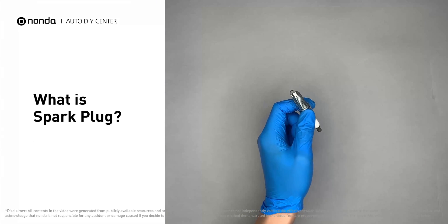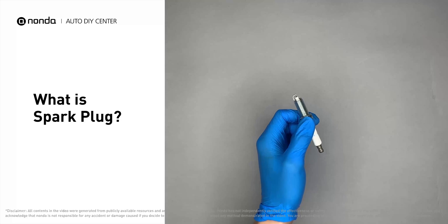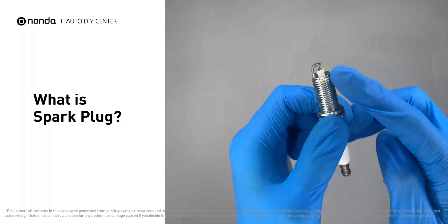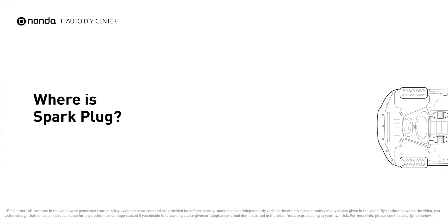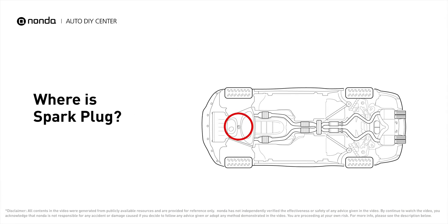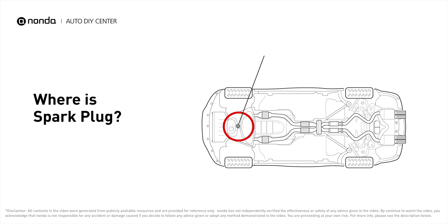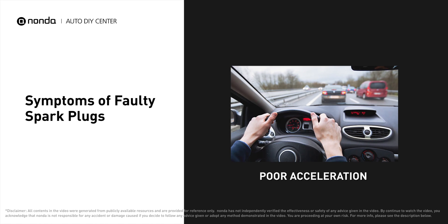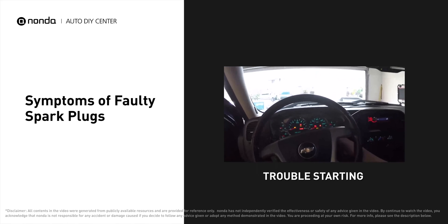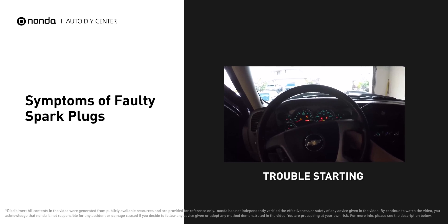Spark plugs are part of the ignition system that supplies the spark igniting the air-fuel mixture, creating the explosion that makes your engine produce power. Typically, spark plugs in 4-cylinder engines are located on the engine's top or side in a row, while spark plugs in inline 6-cylinder engines are usually located on the top or side of the engine head. Faulty spark plugs can result in increased exhaust emissions, poor acceleration, and if completely dysfunctional, your car will not be able to start.